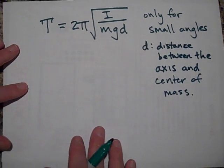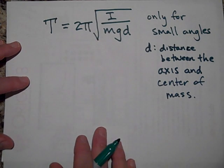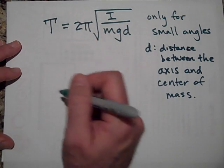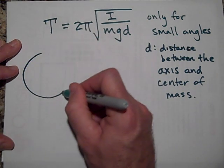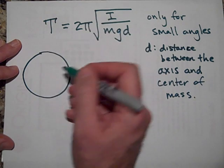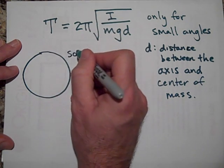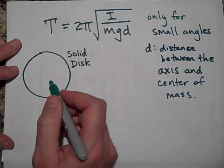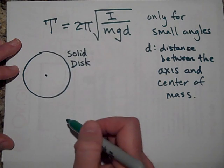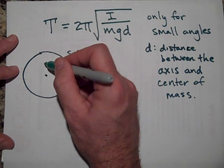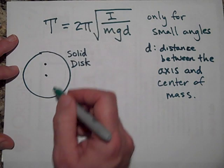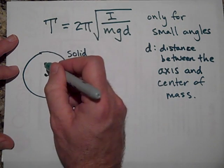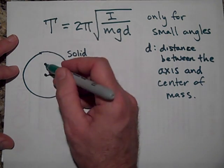So let me just show you how this works then. Let's say that we take a solid disk. I'm going to take a solid disk. So this is solid. And I'm going to drill a hole through it right here. If this is R, we're drilling a hole at R over 2 away from the center.